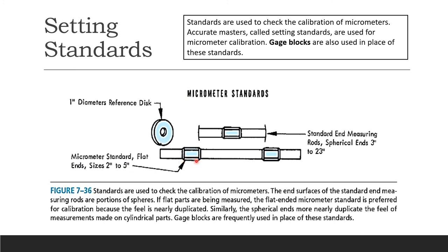Setting standards are used to check the calibration of micrometers. Accurate masters — called setting standards — are used for micrometer calibration. Gauge blocks are also used in place of these standards, especially in academic institutions. Standards include a one-inch diameter reference disc, flat-ended micrometer standards (sizes two to five inches), and standard end-measuring rods with spherical ends (from three inches to 23 inches). For flat parts, flat-ended standards are preferred; for cylindrical parts, spherical-ended standards more nearly duplicate the feel of measurement.